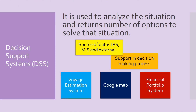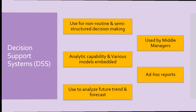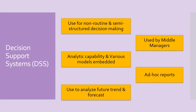The decision support system, DSS, is another important category of information systems. Examples include voyage estimation system, financial portfolio system, and Google Maps. DSS is used to analyze a problem and return a number of options to find the best feasible solution. It plays an important and supporting role for managers in decision-making. It is used by middle managers for non-routine and semi-structured problems, which are somehow difficult to solve.